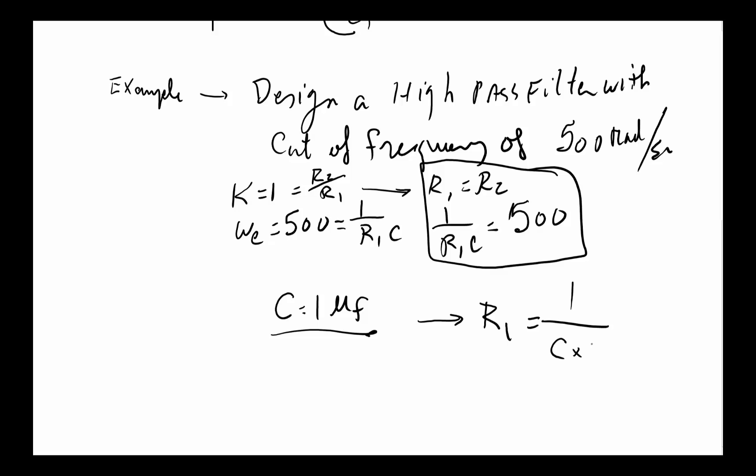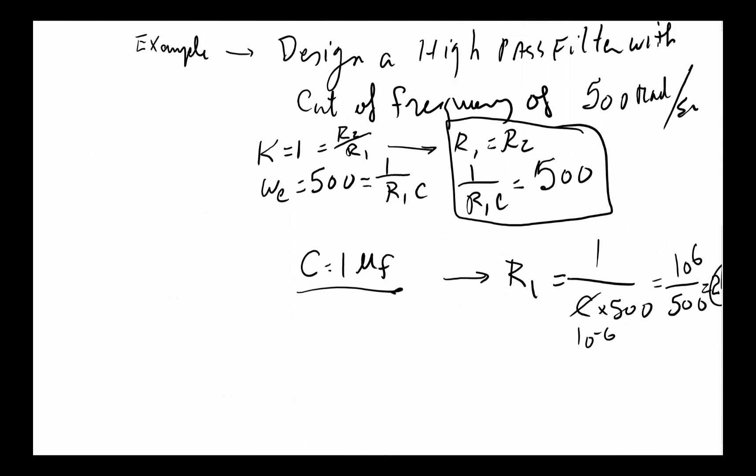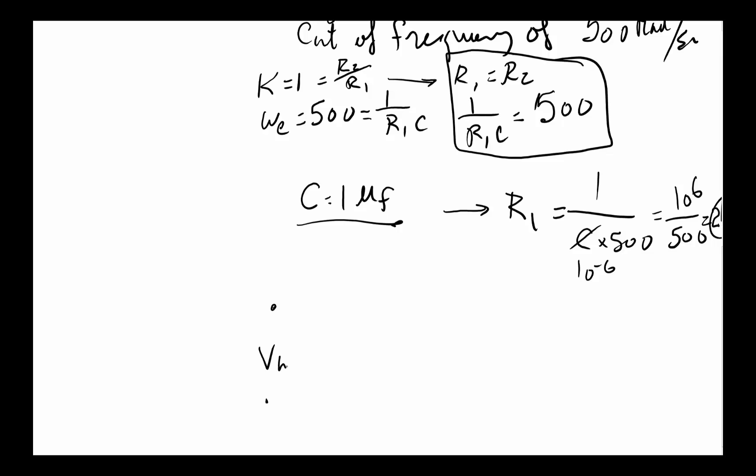Once we've assumed that, by definition that tells us R1 is going to equal 1 over C times 500. Since C is 10 to the minus 6, we will have 10 to the 6 over 500, which is 2 kilohms. R2 is simply R1. All I have to do is draw this circuit: VIN comes in here, I've got a 2 kilohm resistor here, I have a capacitor of 1 microfarad that goes to an op-amp.